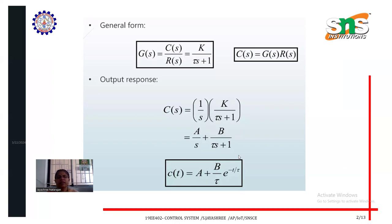If you equate it and define the value, then we get the value of A is 1, B is minus 1. The final equation of first order system is for unit step input C of t equals 1 minus e to the power of minus t by tau.